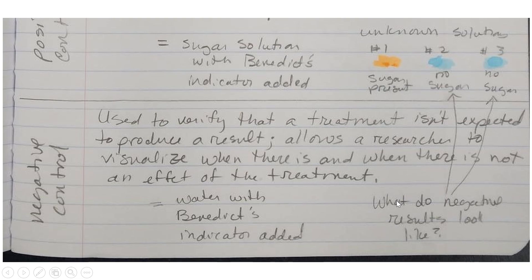So a negative control tells me what do negative results look like, and since I know what it looks like when I put it in with water and there's no sugar in it, I know it looks like this. I take unknown solutions and I add Benedict's. If it looks like this, then I know that that means these have no sugar in them.